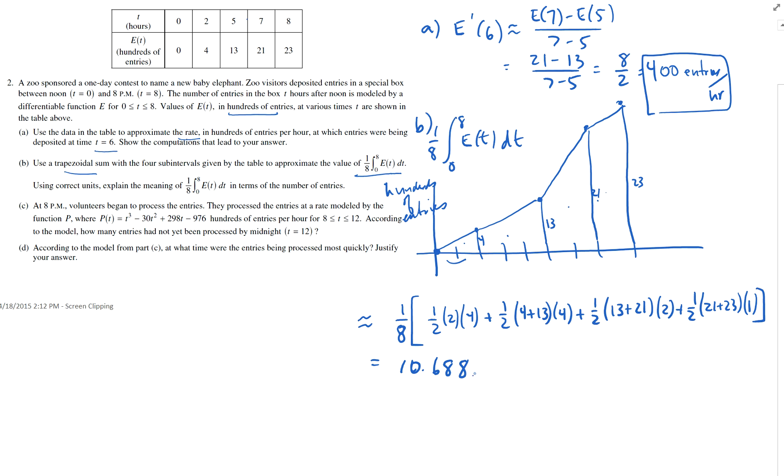Actually, let's talk about that. What does this represent? Because that's the second part of this question. What does this mean in terms of the number of entries? I hope you recognize what this is. This one-eighth is, if this is my a and this is my b, this really is one over b minus a times the integral from a to b of f of x dx. That's the average value of f.